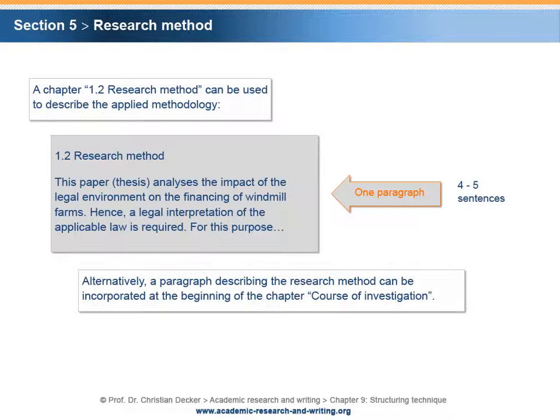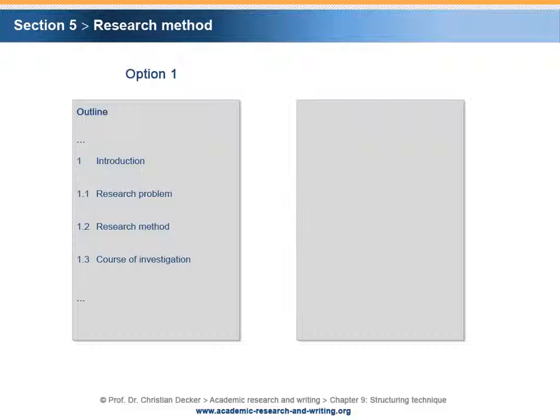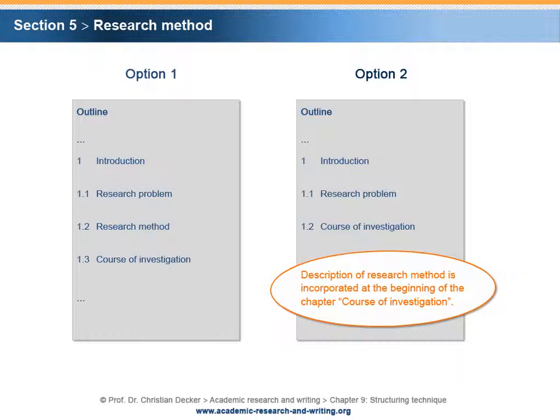Alternatively, a paragraph describing the research method can be incorporated at the beginning of the subchapter course of investigation. The two options for describing the research method are as follows: In option one, the research method is explained in a separate chapter. In option two, the research method is incorporated at the beginning of the chapter course of investigation.